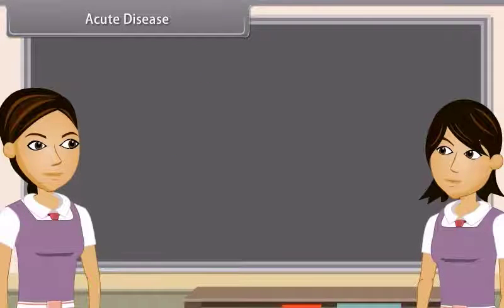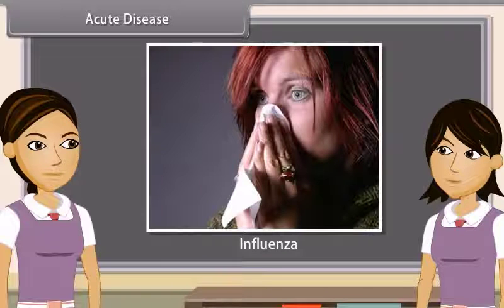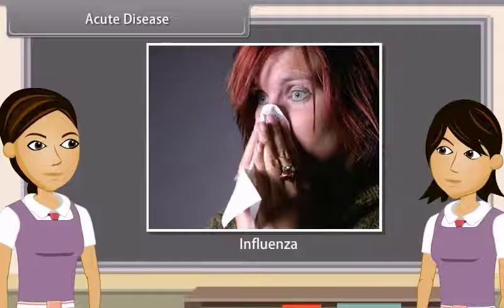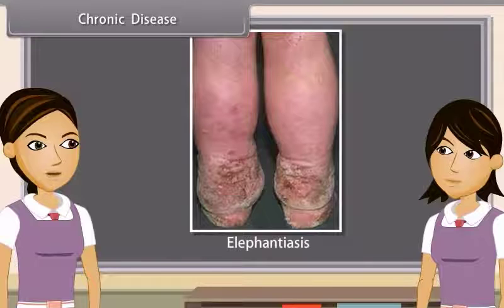Acute diseases are those diseases whose effects come on suddenly and affect the body quickly — for example, influenza. Chronic diseases are those diseases whose symptoms last for months or years — for example, elephantiasis, tuberculosis, etc.